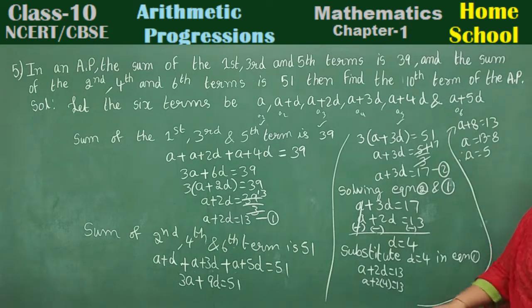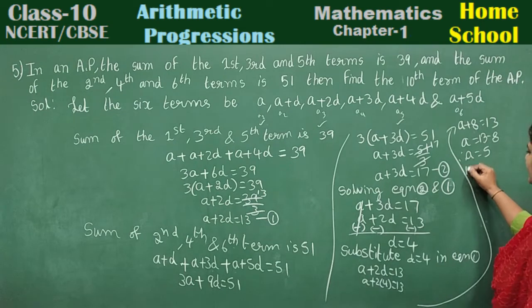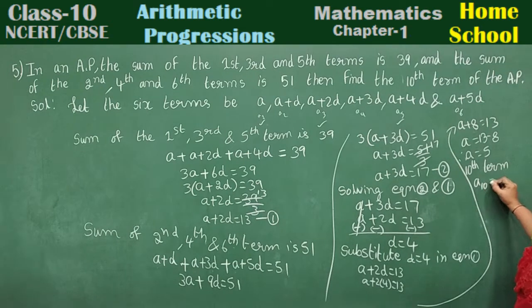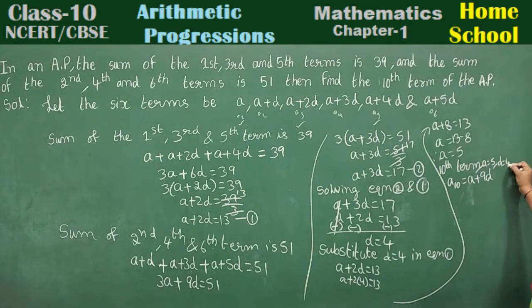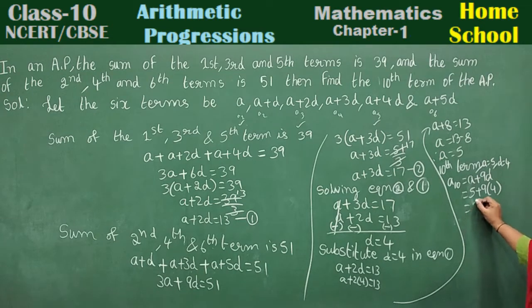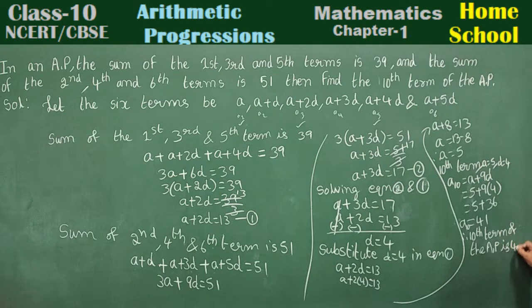What term we need to calculate? 10th term. The 10th term, A10, its general form is a plus 9d. Substitute a value 5 and d value 4: 5 plus 9 times 4 equals 5 plus 36 equals 41. Therefore, 10th term of the AP is 41.